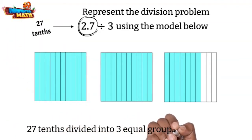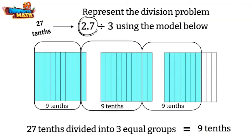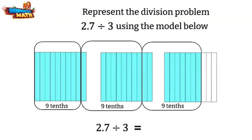So 2 and 7 tenths divided by 3 equals 9 tenths.